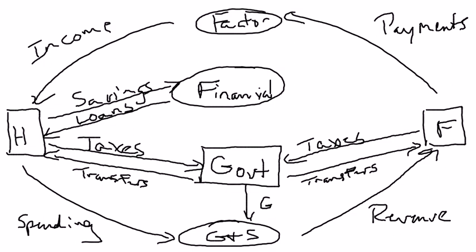In addition, if all the tax revenue that the government is bringing in is not enough to finance all the transfer payments and all the government expenditures they're making, then the other place the government can get its funds is from the financial market. So the government might get loans from financial markets. If you've heard people talk about the United States running a budget deficit, that's just a fancy way of saying the government's taxes are not enough to pay for all of the spending on transfer programs and goods and services. As a result, the only way the government can pay for those is to obtain loans in the financial sector.